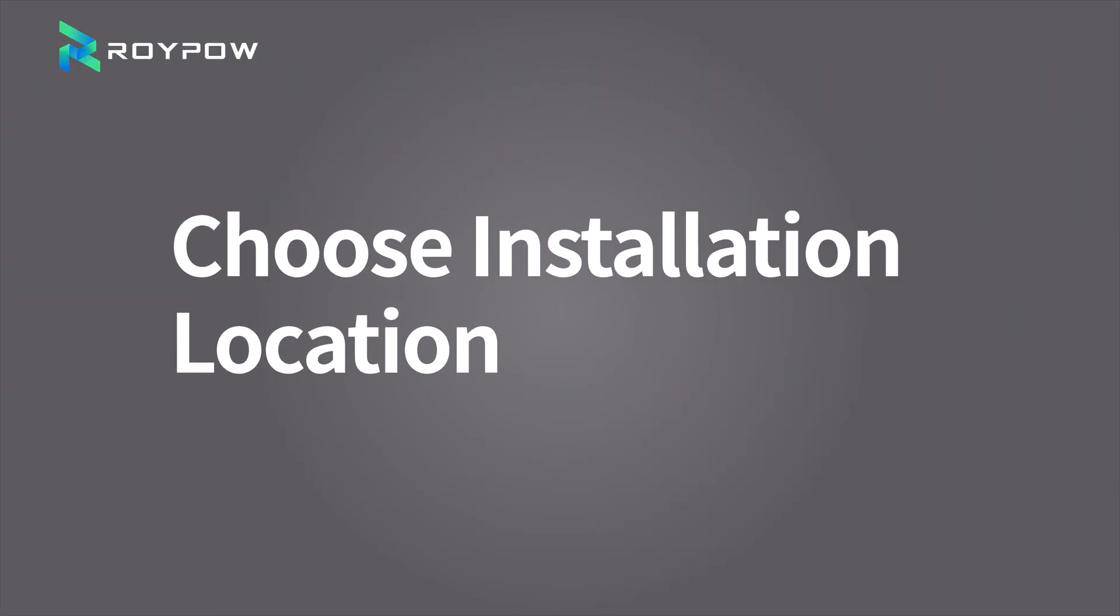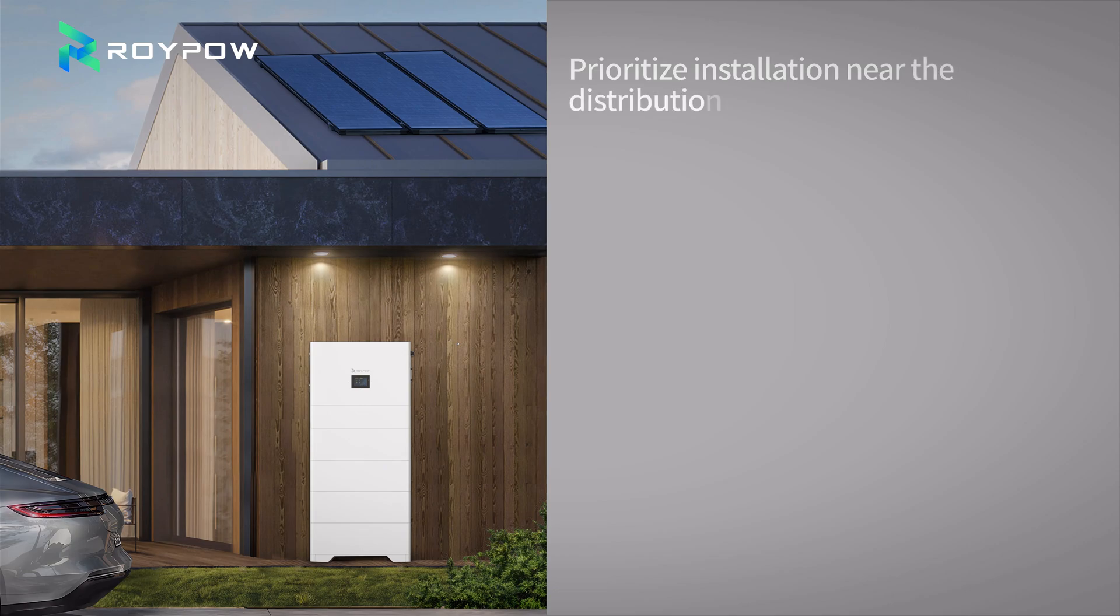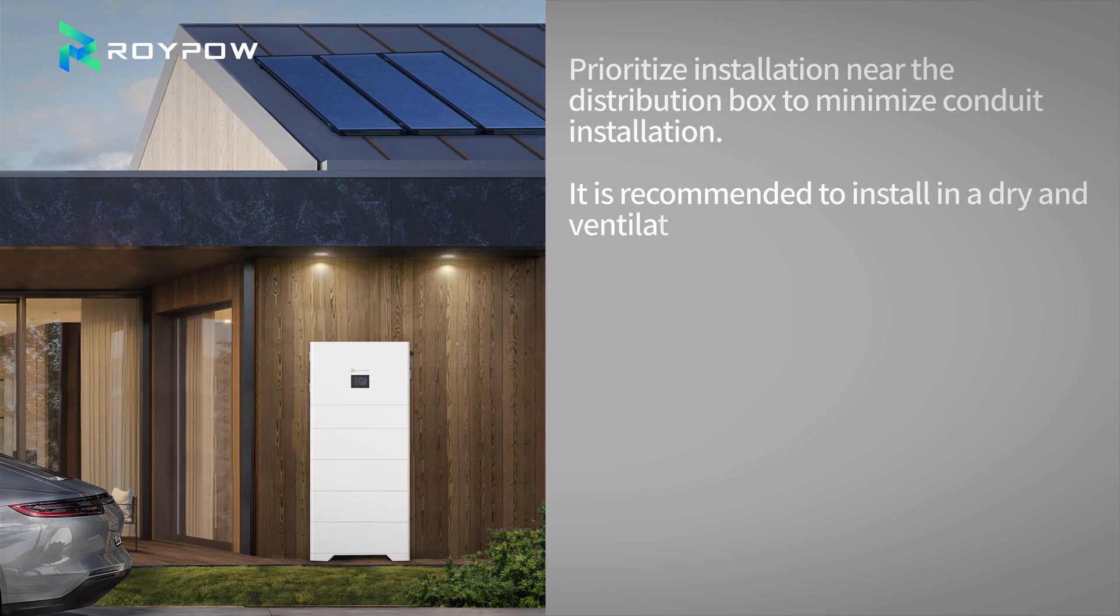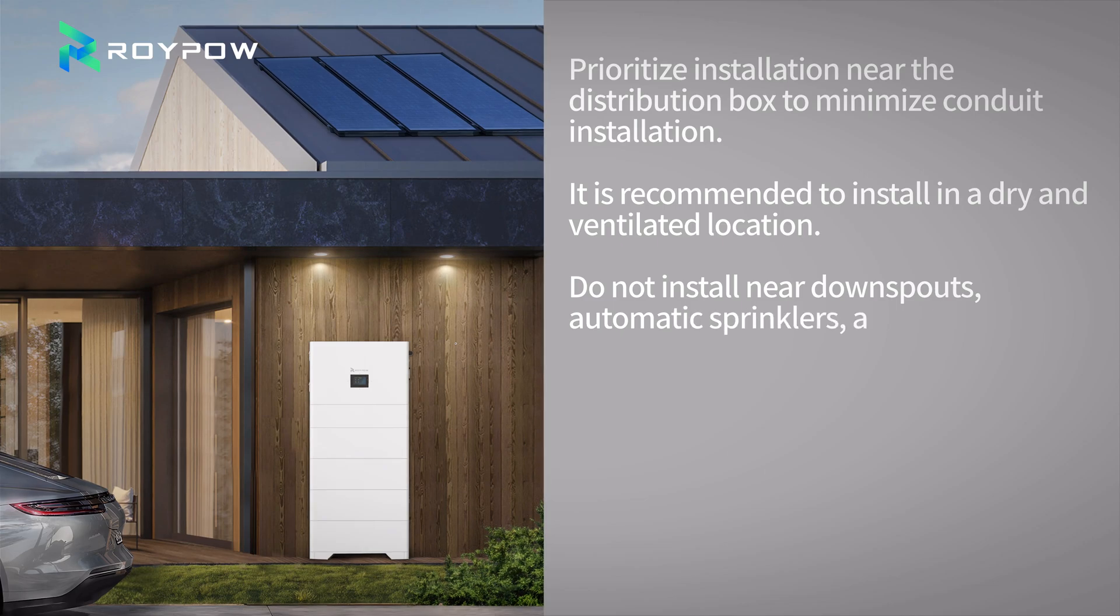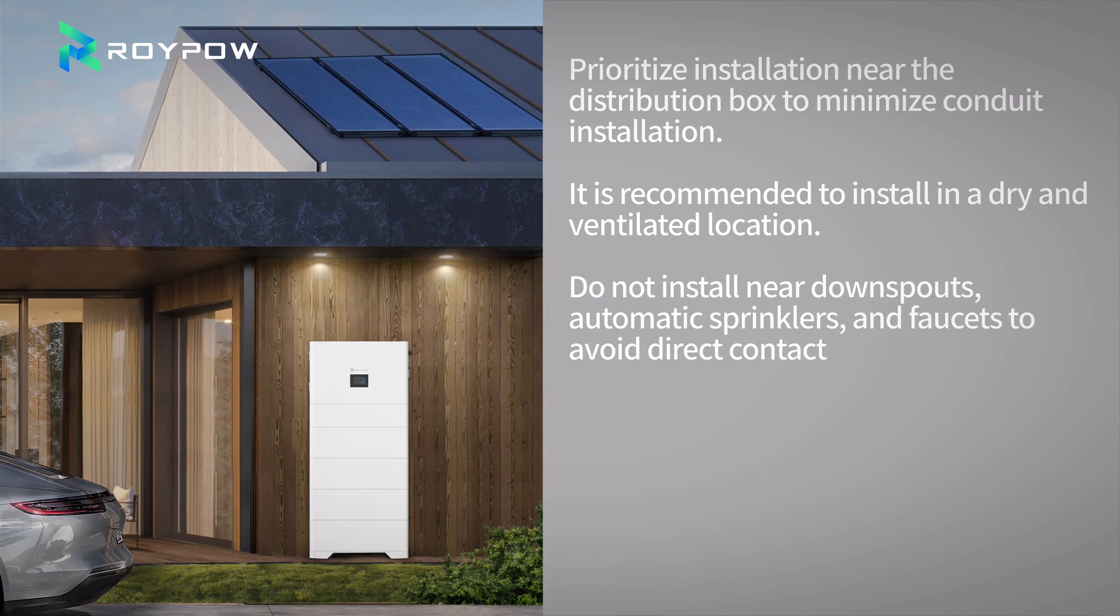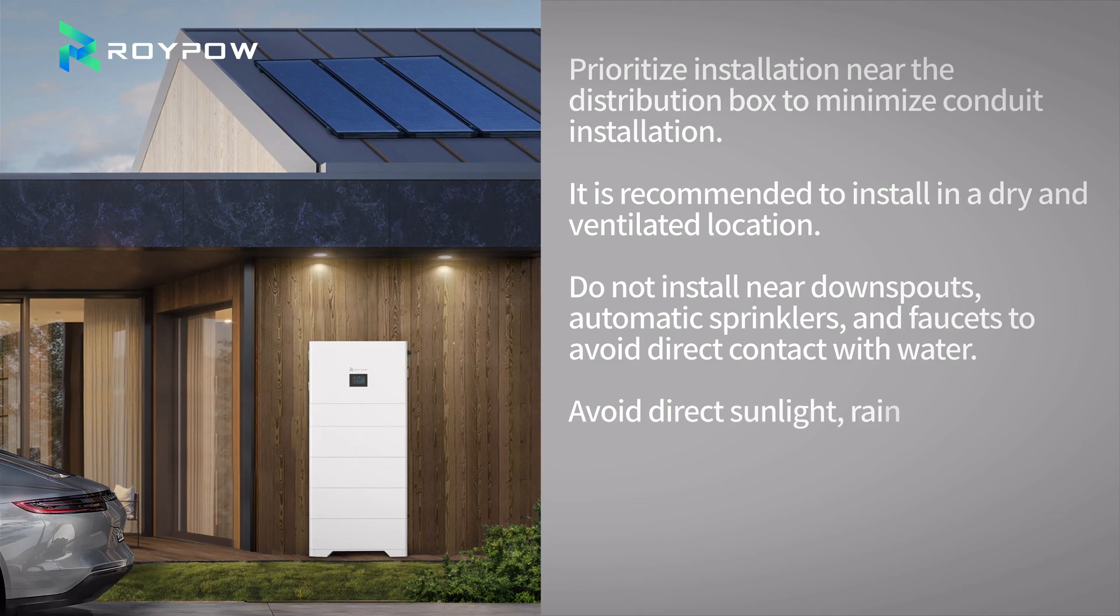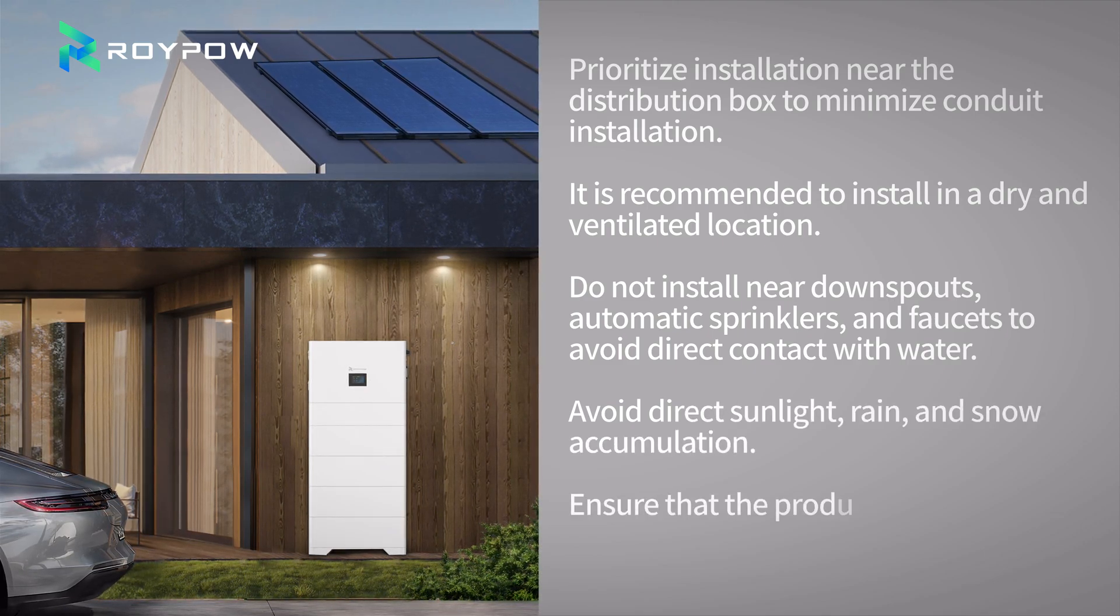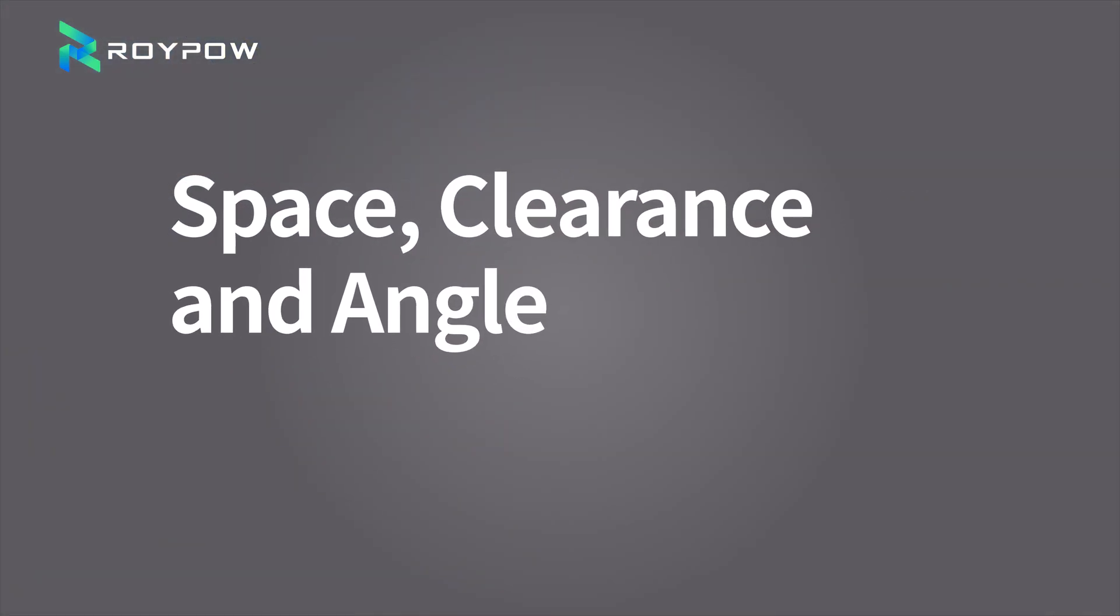Choose Installation Location. Prioritize installation near the distribution box to minimize conduit installation. It is recommended to install in a dry and ventilated location. Do not install near downspouts, automatic sprinklers, and faucets to avoid direct contact with water. Avoid direct sunlight, rain, and snow accumulation. Ensure that the product does not obstruct vehicle access, space, clearance, and angle.